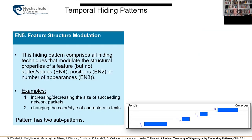Finally, the feature structure modulation pattern: we alter the structure of the feature utilized for embedding, and that encodes the hidden information. For instance, we could increase the size of network packets so that we have either size one or size two, signaling hidden symbol one or two. We could also change the color or style of characters in text. There are also two sub-patterns for this.